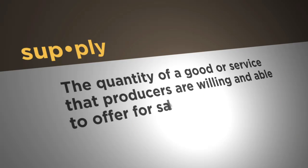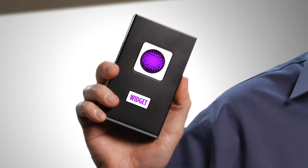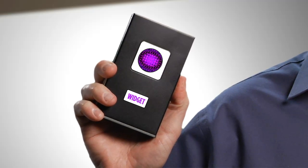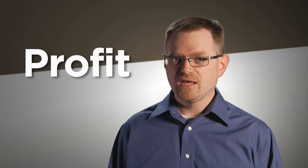If you listened to Episode 7 of our podcast series, you'll know that it was all about supply. Economists define supply as the quantity of a good or service that producers are willing and able to offer for sale at each possible price during a given time period. For example, let's say I own a firm that produces and sells widgets, a piece of hardware people use to improve the performance of their computers. My objective as a business owner is to make a profit, which is the difference between my cost of producing the widgets and the price that I receive for selling the widgets to buyers.